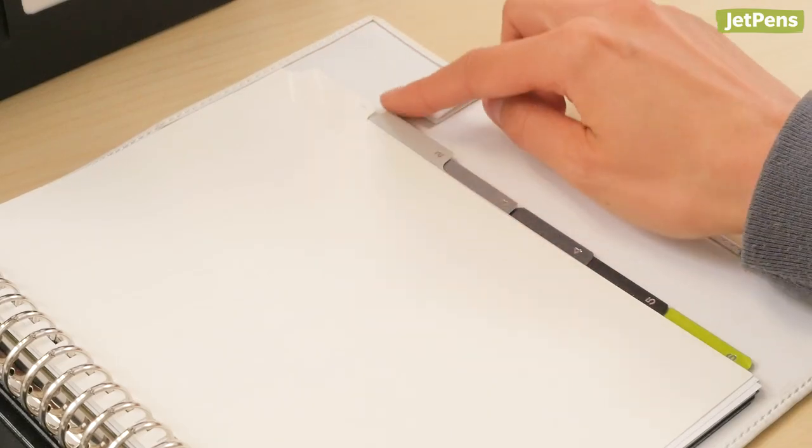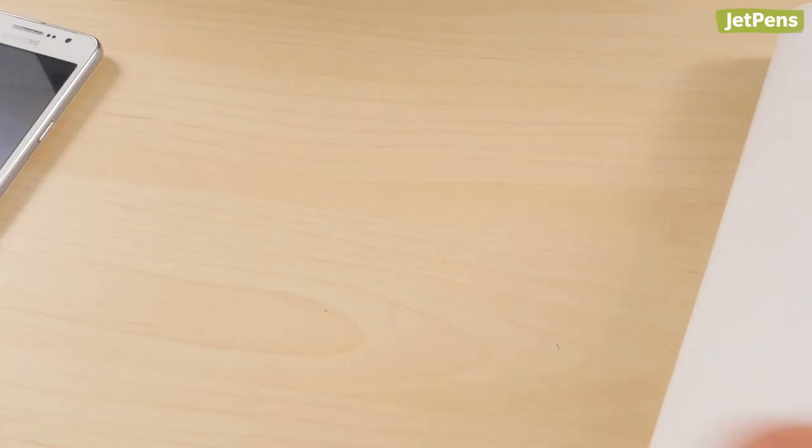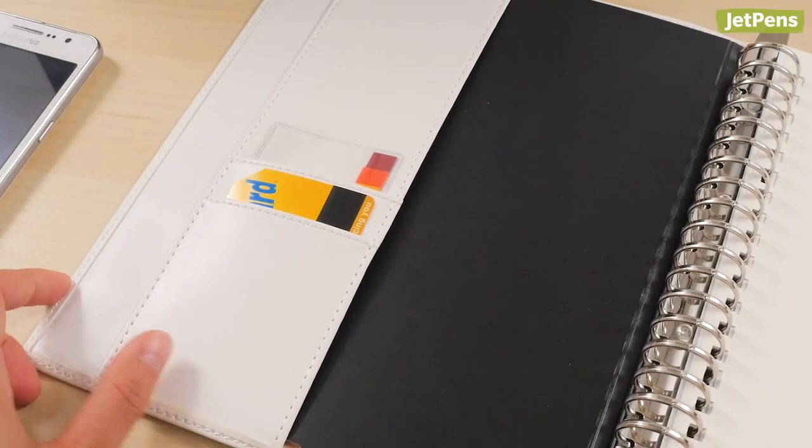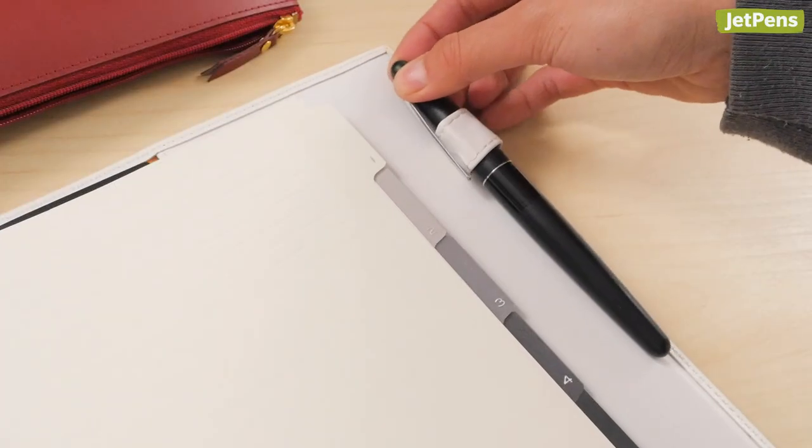In addition, six divider tabs are included with each binder. The front flap of the cover holds cards and other small papers, and the back cover has a pen loop.